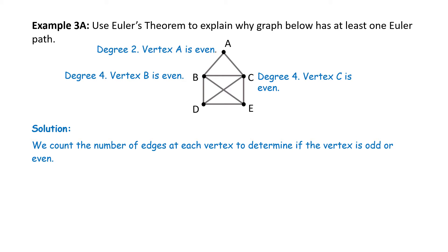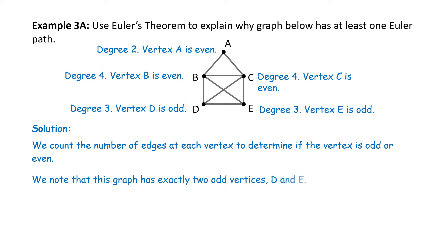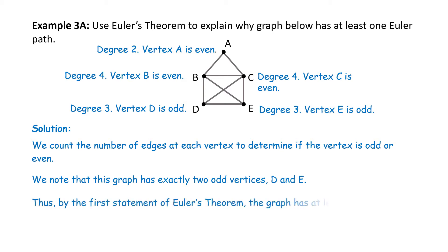Vertex D has three edges coming out of it, making it degree 3, so vertex D is odd. Vertex E also has three edges coming out of it, so vertex E is odd. We note that this graph has exactly two odd vertices: D and E. Thus, by the first statement of Euler's Theorem, the graph has at least one Euler path and no Euler circuits.